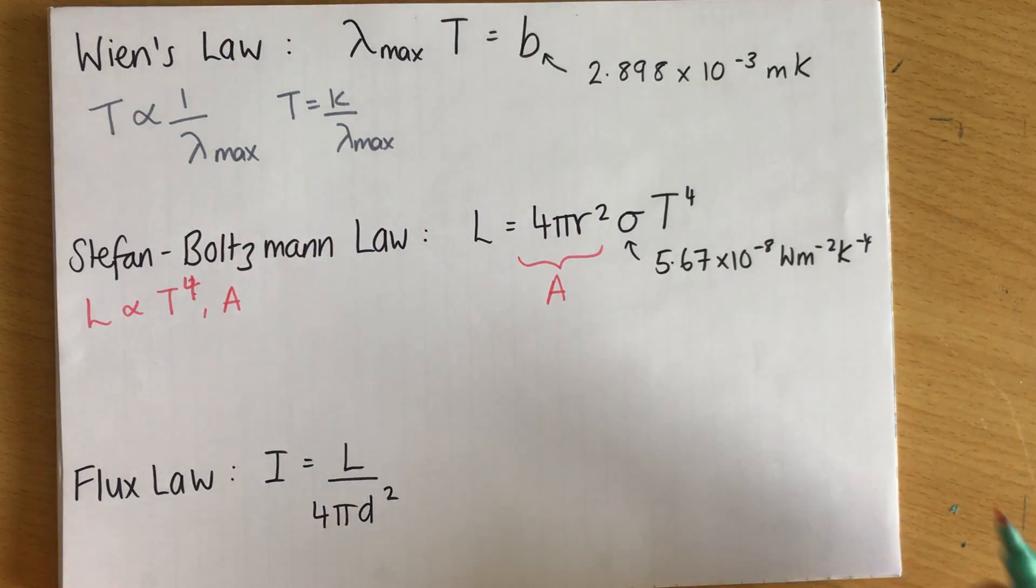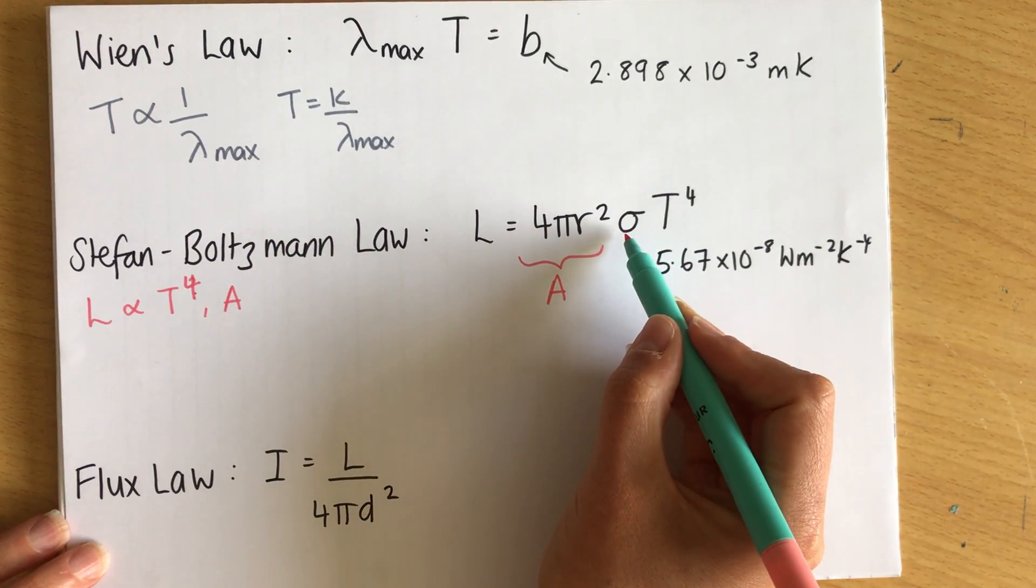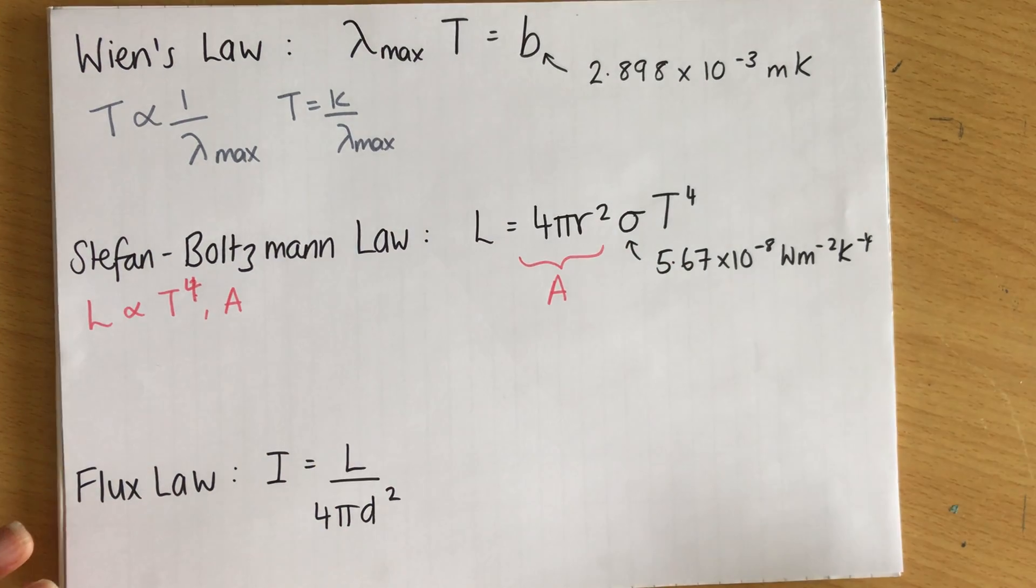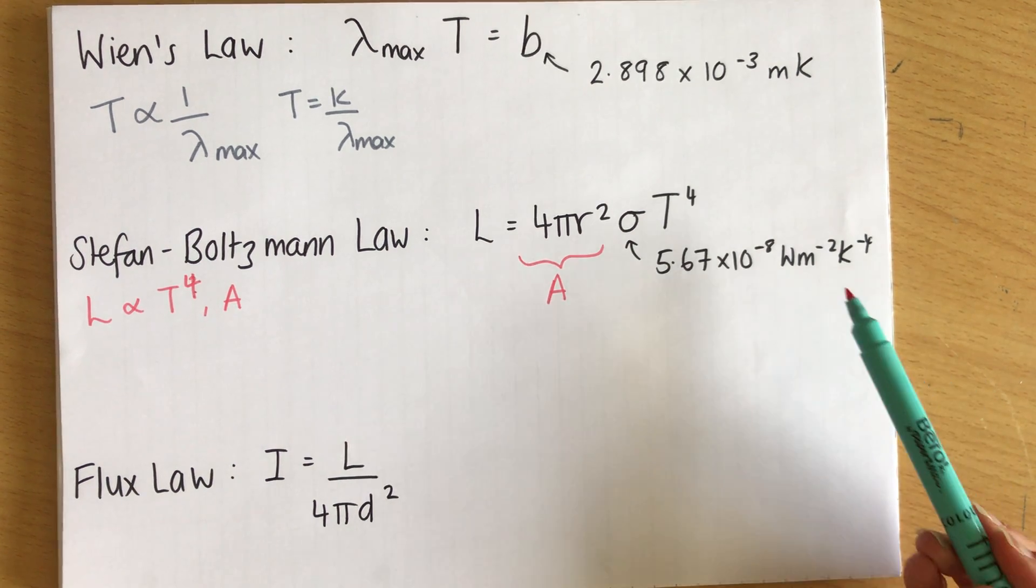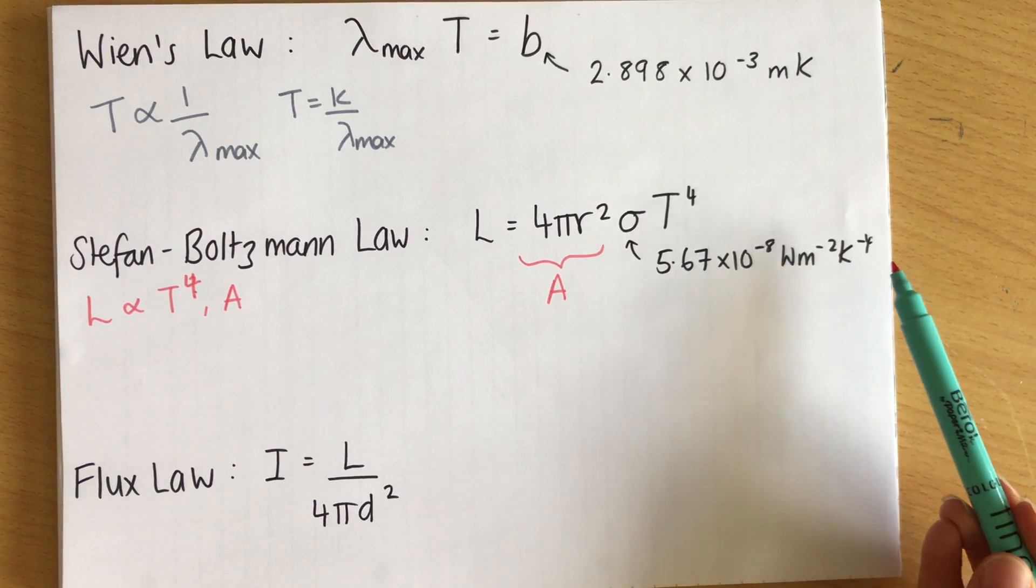So luminosity is proportional to area, and it's proportional to T to the 4, temperature to the 4. And to make it equal, we have to have a constant proportionality. And that constant proportionality is sigma, which is the Stefan Boltzmann constant. And it is 5.67 times 10 to the minus 8 watts per metre squared per Kelvin to the minus 4.